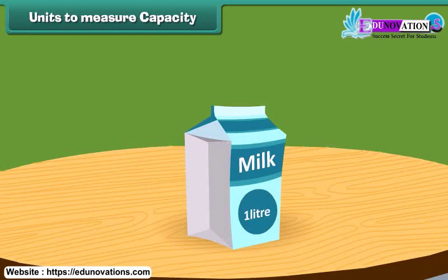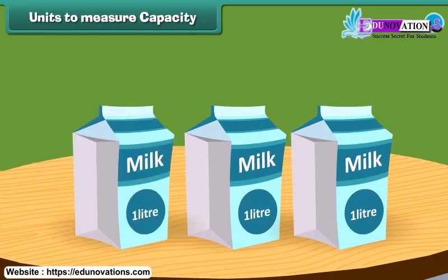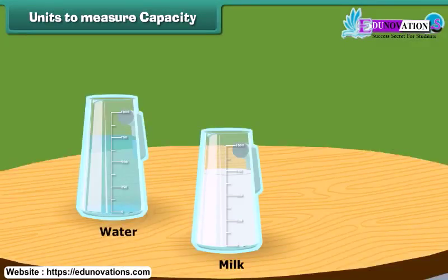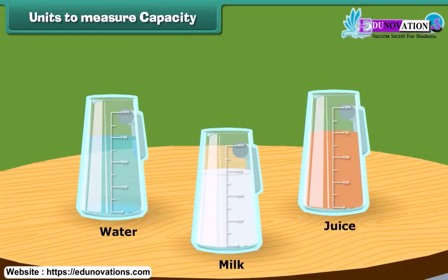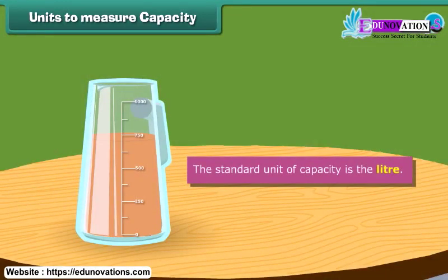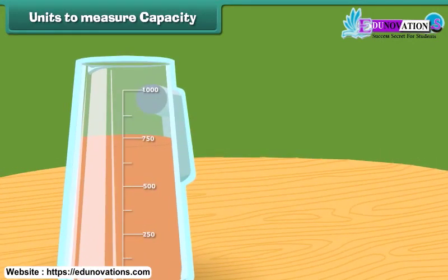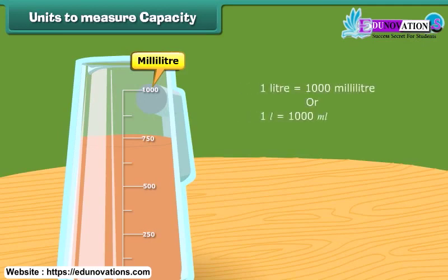How much milk comes in your home daily? 1 liter, 2 liters or more. The capacity of liquids like water, milk, juice, etc. is measured in terms of liters or milliliters. The standard unit of capacity is the liter. The part obtained by dividing 1 liter into 1,000 equal parts is called a milliliter. This means that 1 liter is equal to 1,000 milliliters.